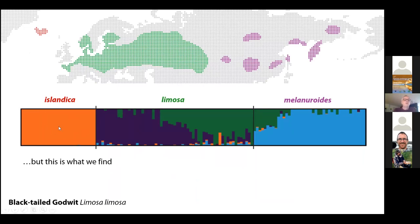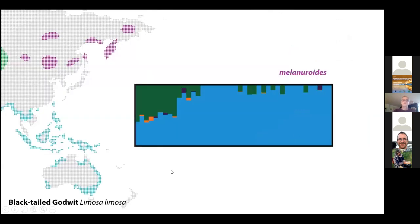But here's what you really find: in the west we do have a very deeply diverged and well-described subspecies in islandica, but across the wide longitudinal range of limosa we have a genetic cline, meaning this subspecies has been generated either by admixture of two historical lineages or has simply drifted apart through isolation at either end, creating genetic heterogeneity.